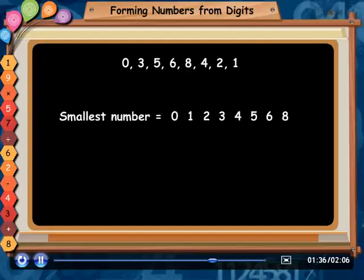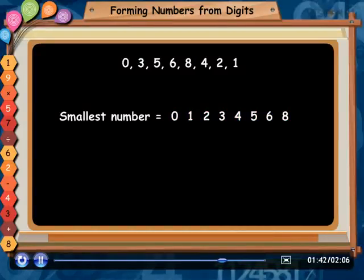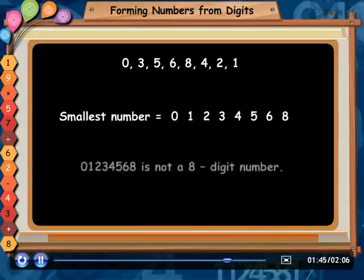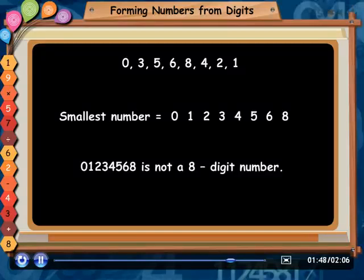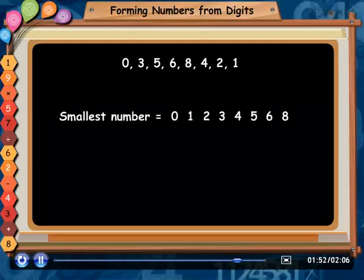Smallest number is equal to 01234568. If we write the number in this way, then the number formed is not 8 digits. So, in order to form an 8-digit number, we need to shift 0 to next to 1.